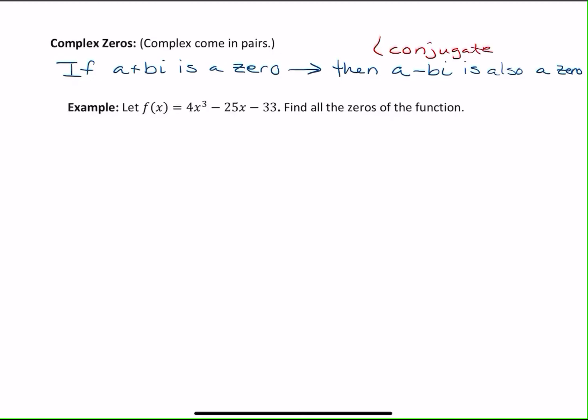The reason why it's the conjugate is when you multiply a complex by its conjugate, it comes out to be a real number, and that's why there's no i's in the function. If you had just a plus bi without the a minus bi, there would be an i when you're reading the function. So the conjugate turns it into all real numbers. Here we've got f(x) equals 4x cubed minus 25x minus 33. Find all the zeros.